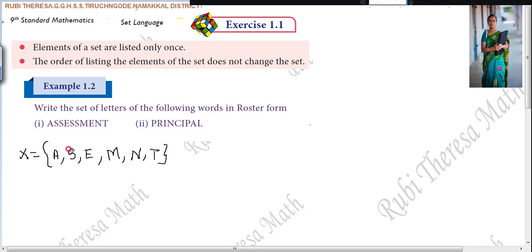Next, E. E already there. You wrote E already, so you should not write it. Next one, N, T. So this is set X: A, S, E, M, N, T. So first point is okay. Next one, the order of listing the elements of your set does not change the set. Is it not compulsory to write it in order? Only the element should be there. So S, A, E, N, M, T - changing the order, it won't affect the set. Both are same. Both the sets are same. Next one, second problem. This is first problem. Next one, second problem.